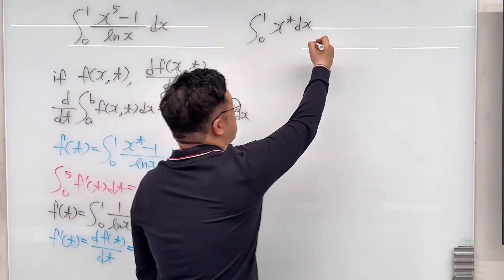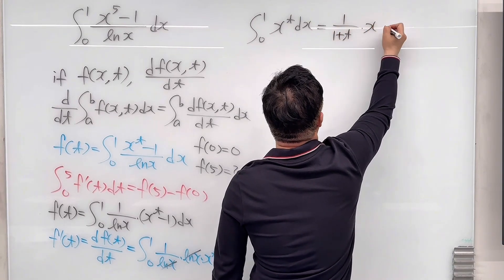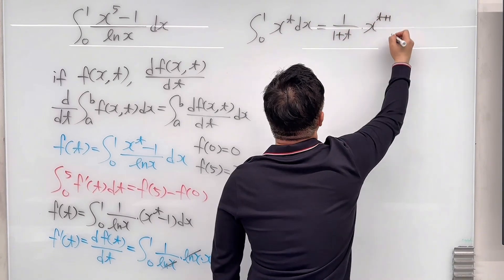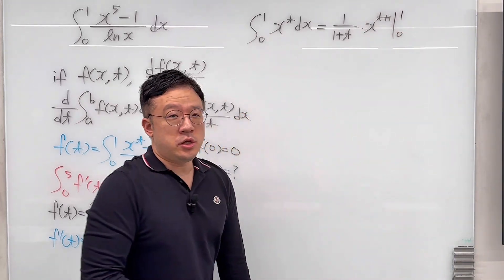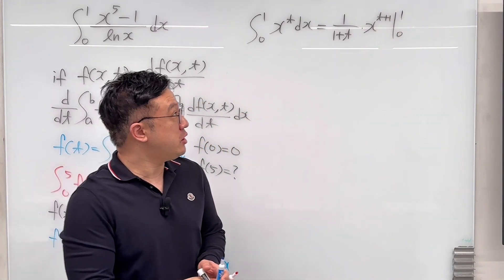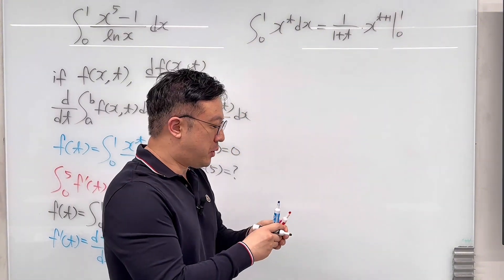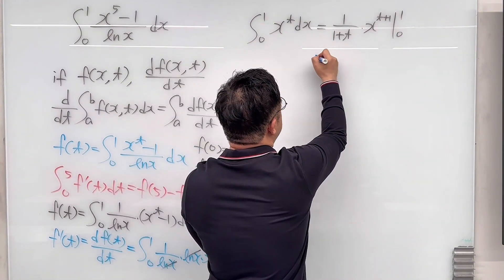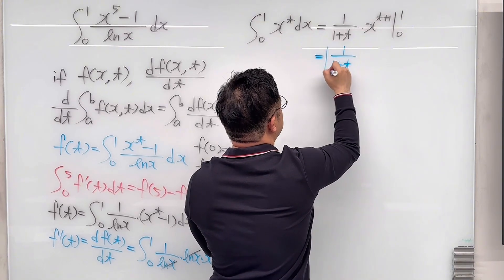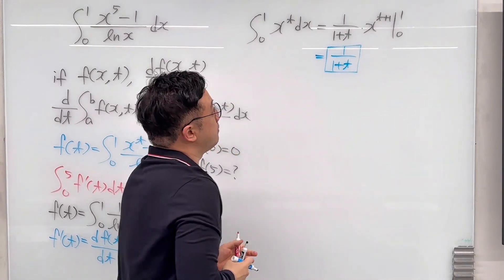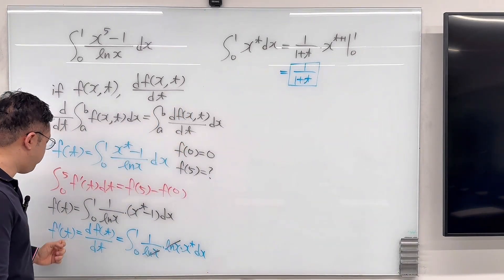So eventually what we have is the integral from 0 to 1 of x to the power of t, dx. Working this out, it should be just the same as 1 over (1 plus t) times x to the power of t plus 1, from 0 to 1. Using the fundamental theorem of calculus and plugging in x equals 0 and 1, this whole thing has to be just the same as 1 over 1 plus t. This 1 over (1 plus t) is the same as f prime of t.